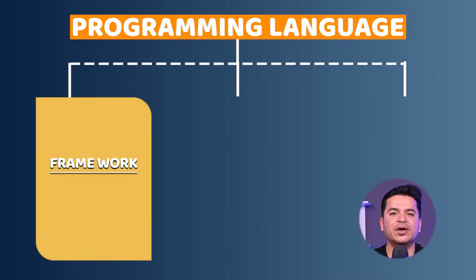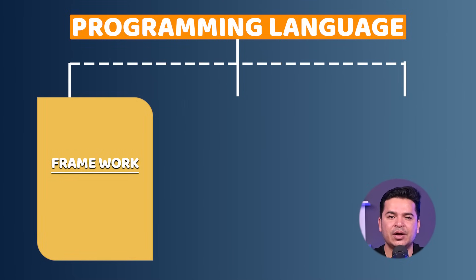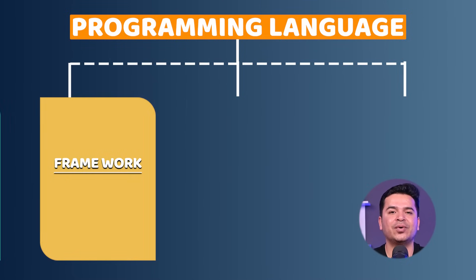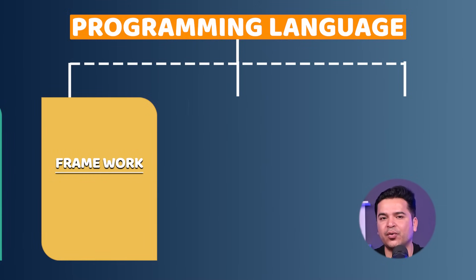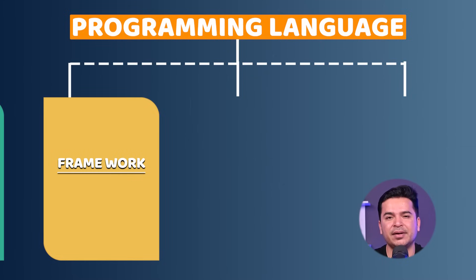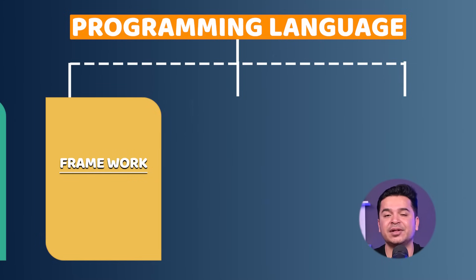After the framework, we are going to talk about Git and GitHub — how we work in real time. We'll cover how Git works, how GitHub works, how to create pull requests, how to push the code, how to clone repositories, reset, rebase, and all the Git commands that you need in real time. We'll discuss them in detail.